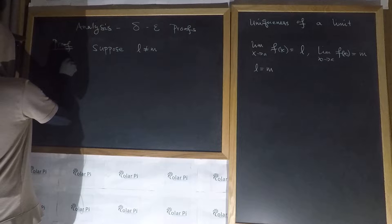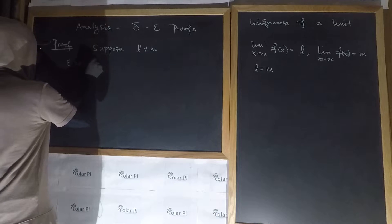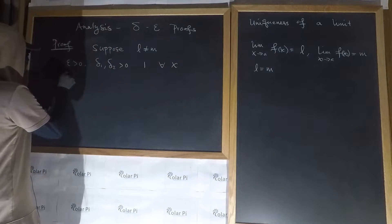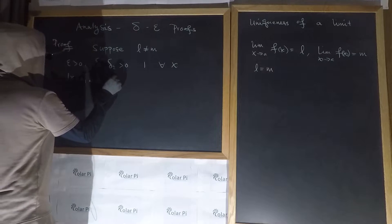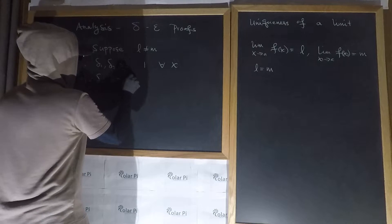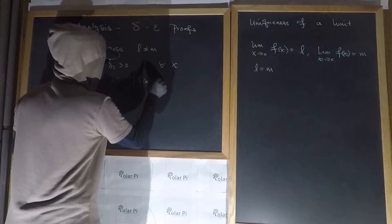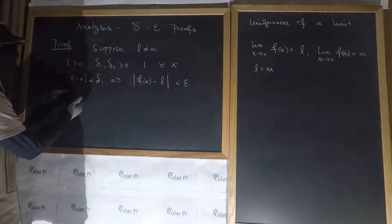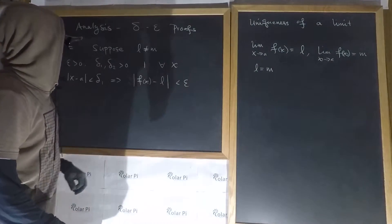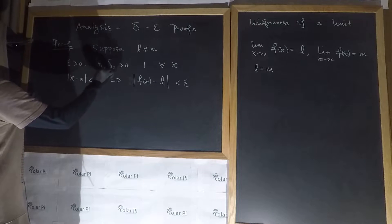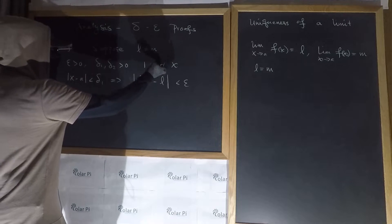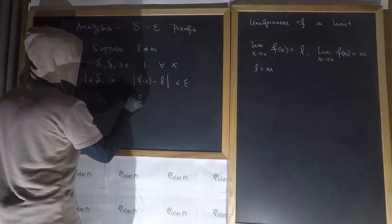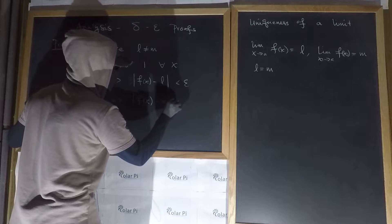For every epsilon greater than zero, there is a delta-one and a delta-two greater than zero, such that for all x: whenever the absolute value of x minus a is less than delta-one, it follows that the absolute value of f(x) minus L is less than epsilon. Delta-one and that condition are the translation of the first limit statement. But also, since for every epsilon greater than zero we also have a delta-two greater than zero, such that for all x, whenever |x − a| < delta-two, we have |f(x) − M| < epsilon.